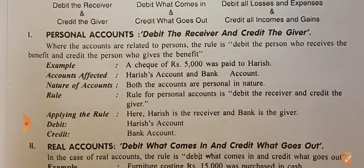Example: a cheque of Rs. 5,000 was paid to Harish. Harish is the receiver — Harish is debited. The bank is also a personal account. When we make a payment of Rs. 5,000 by cheque, we check the bank account and transfer from the bank account. So the bank account is a personal account — bank is the giver, so bank is credited.